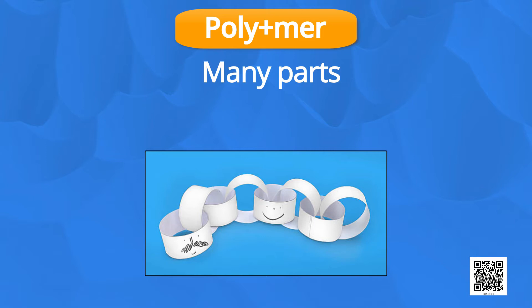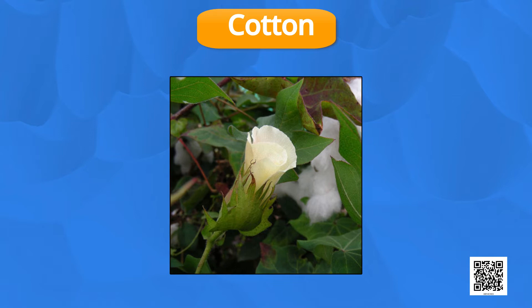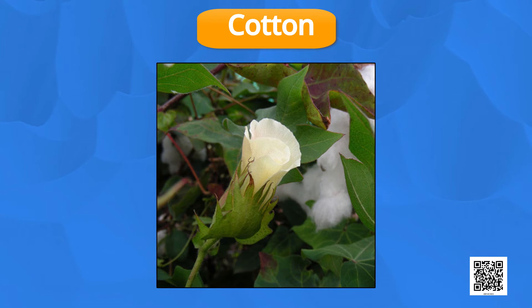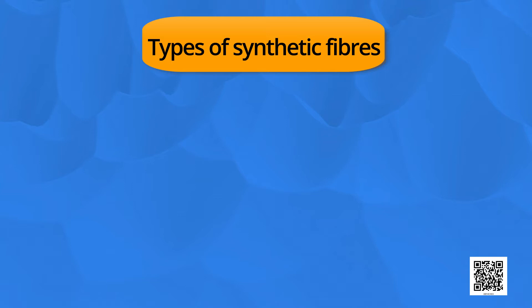Polymers are also found in nature. Cotton is an example of a polymer known as cellulose. Cellulose is made up of a large number of glucose units, and we get glucose from food. Now we shall learn about the types of synthetic fibers: rayon, nylon, polyester, and acrylic.